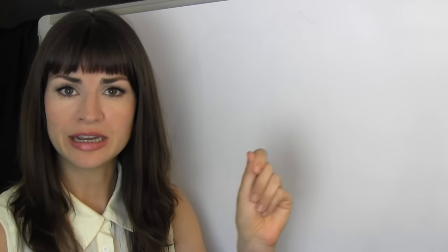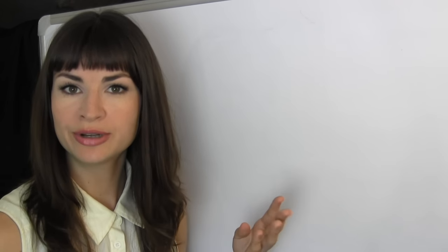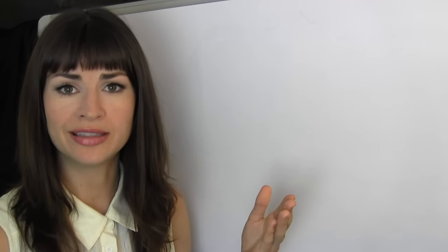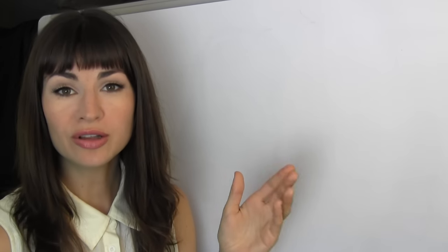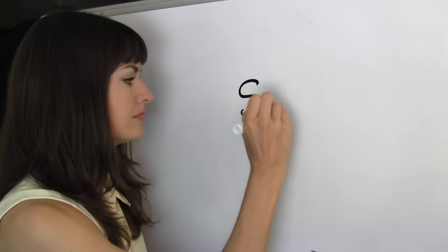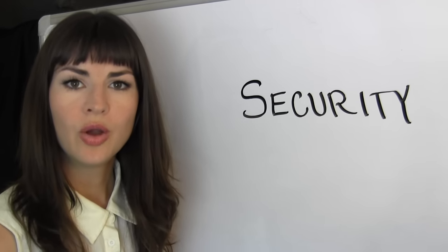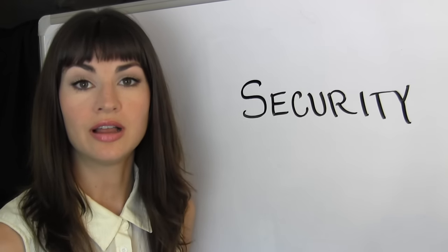We ended with the questions: who gets to make updated entries into our e-money ledger, when do they get to make them, and why should anybody trust that the updates that they make are accurate? And all of those questions can really be summed up under one heading: Security. What is the security model of a blockchain?